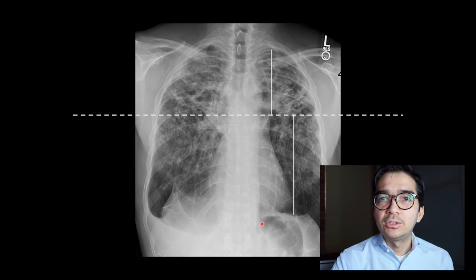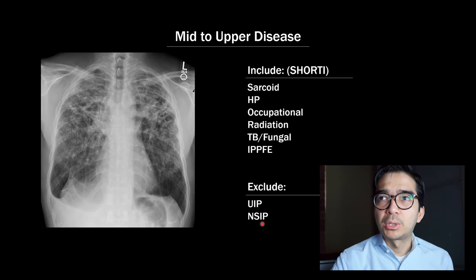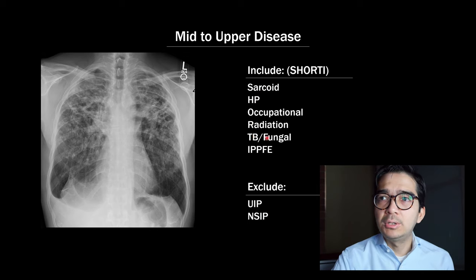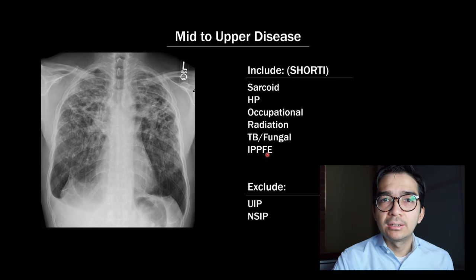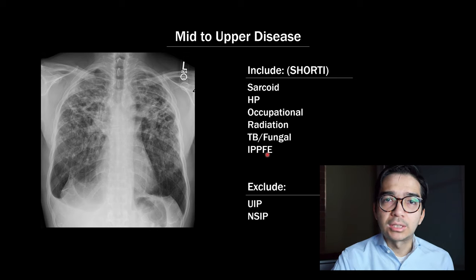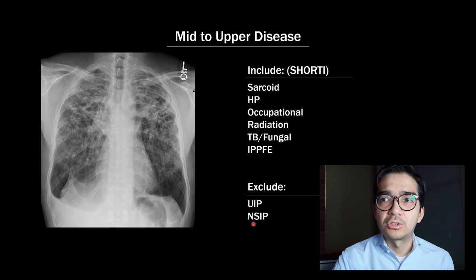So I can use my differential for upper lung predominant disease — SHORTY: sarcoid, HP, occupational, radiation, TB/fungus, and IPPFE, or idiopathic pleuroparenchymal fibroelastosis. And even more importantly, we can exclude a couple of things like usual interstitial pneumonia and nonspecific interstitial pneumonia.